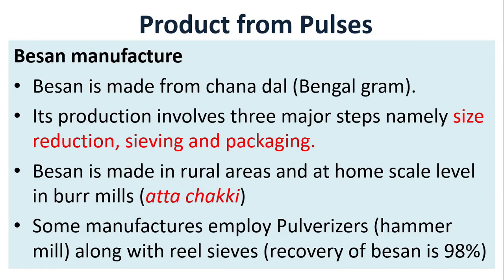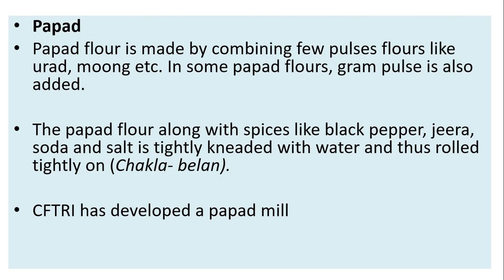Products from pulses — Besan manufacture: besan is made from chana dal (Bengal gram). Its production involves three major steps: size reduction, sieving, and packaging. Besan is made in rural areas and at home scale level in bur mills or ata chakki. Some manufacturers employ pulverizers and hammer mills along with reel sieves. Recovery of besan is 98 percent.